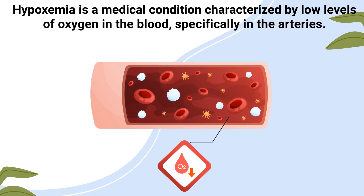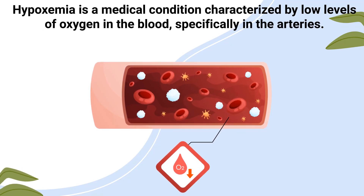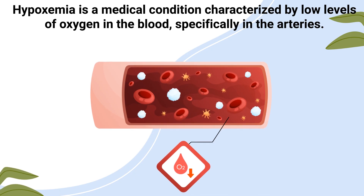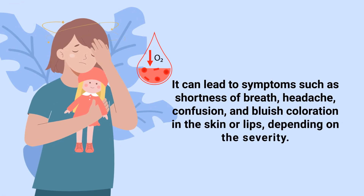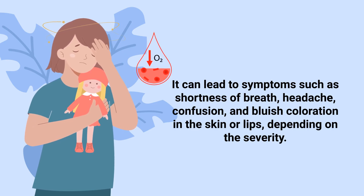Hypoxemia is a medical condition characterized by low levels of oxygen in the blood, specifically in the arteries. It can lead to symptoms such as shortness of breath, headache, confusion, and bluish coloration in the skin or lips, depending on the severity.